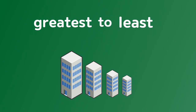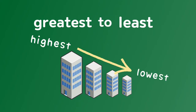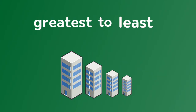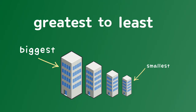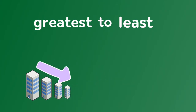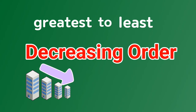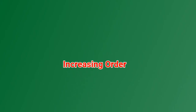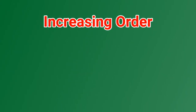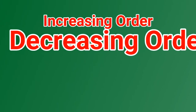Greatest to Least means from highest to lowest, or from biggest to smallest. It is called decreasing order. Increasing order, decreasing order.